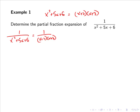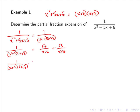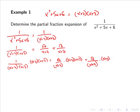Now we wish to conduct the partial fraction expansion of 1/((x+2)(x+3)). This can be expressed as some constant A/(x+2) plus some other constant B/(x+3), where A and B are to be determined. We then multiply across by the denominator (x+2)(x+3) to simplify the expression.